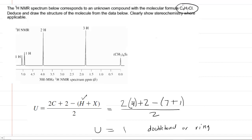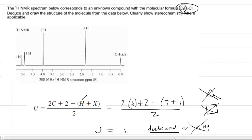Given that there are only 4 carbons in the molecule, a ring is unlikely because it would have to be either a 4-carbon ring or a 3-carbon ring with a methyl group. Both of those rings are structurally unstable, so it's very unlikely that we have a ring in this case, and we're going to go with a double bond.